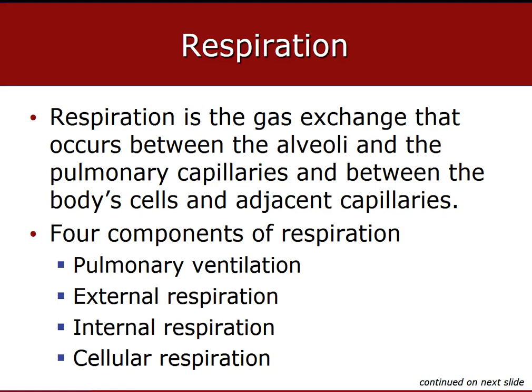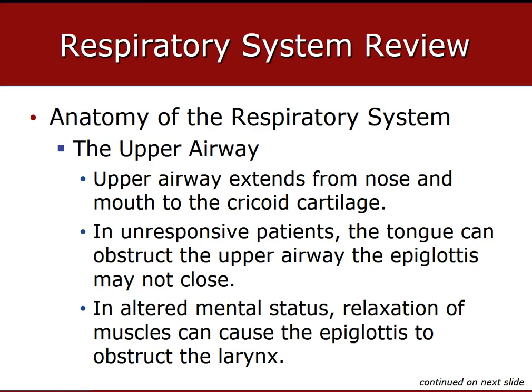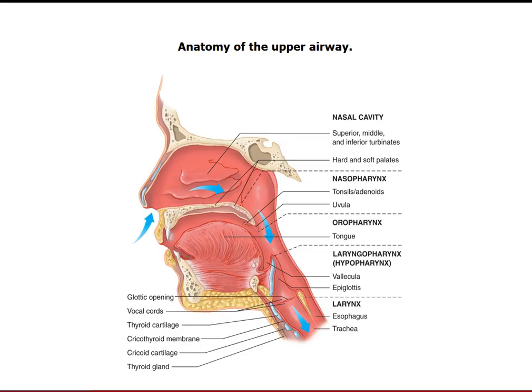As far as the upper airway goes, we're really focused on the nose, mouth, and cricoid cartilage. In an unresponsive patient, the tongue is the primary number one reason the airway gets obstructed. The tongue is a muscle, and when it relaxes it falls back over the epiglottis, occluding the airway and causing the patient to basically suffocate.